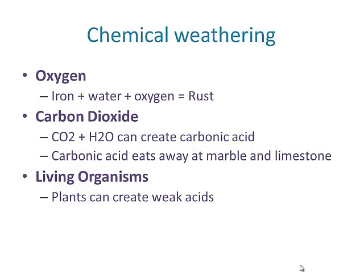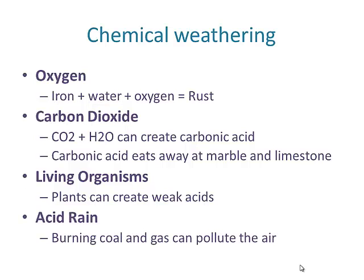Living organisms can also create weak acids, and those weak acids can help to wear away and change the rock. Acid rain normally occurs in areas with a lot of coal burning or gas that pollutes the air. Those gases are carried up into the clouds, mix with water vapor, and when the particles get large enough to fall out, they carry those chemicals down — that's what causes acid rain.